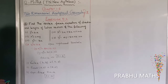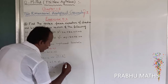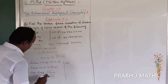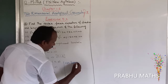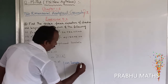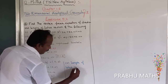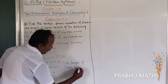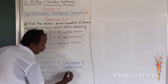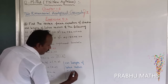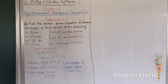Fourth, find the length of the latus rectum. The length of the latus rectum is equal to 4a. Now 4a is equal to 16. So the first subdivision is fully completed.